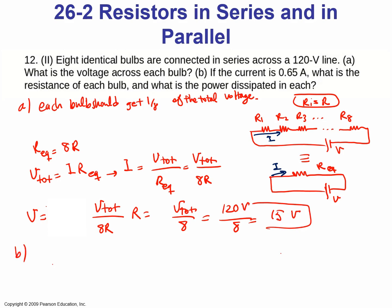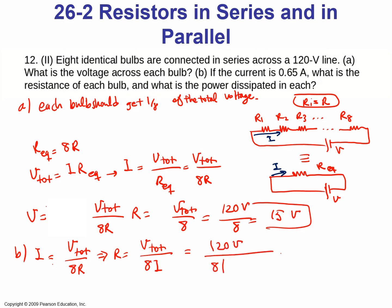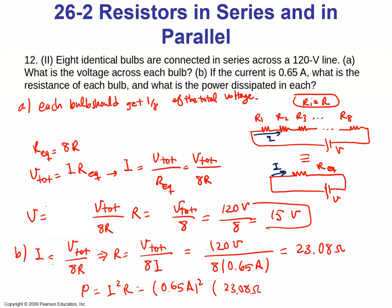For part B, what is the resistance of each bulb? V_total equals I times 8R, so R equals V_total divided by 8I. With current 0.65 amperes: R equals 120 volts divided by 8 times 0.65 amperes, giving us 23.08 ohms. The power dissipated in each bulb is I squared R, which equals 0.65 squared times 23.08 ohms, giving approximately 9.8 watts.